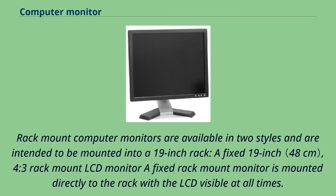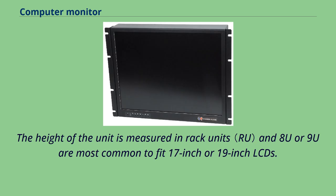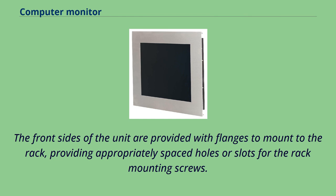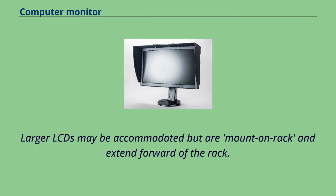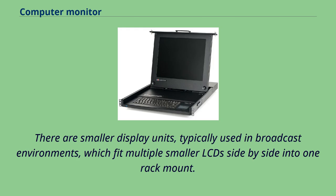Rack mount computer monitors are available in two styles and are intended to be mounted into a 19-inch rack. A fixed rack mount monitor is mounted directly to the rack with the LCD visible at all times. The height of the unit is measured in rack units, with 8U or 9U being most common to fit 17-inch or 19-inch LCDs. The front sides of the unit are provided with flanges to mount to the rack with appropriately spaced holes or slots for rack mounting screws. A 19-inch diagonal LCD is the largest size that will fit within the rails of a 19-inch rack. There are also smaller display units, typically used in broadcast environments, which fit multiple smaller LCDs side-by-side into one rack mount.